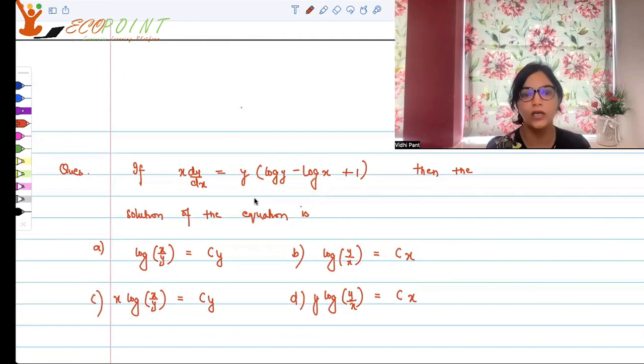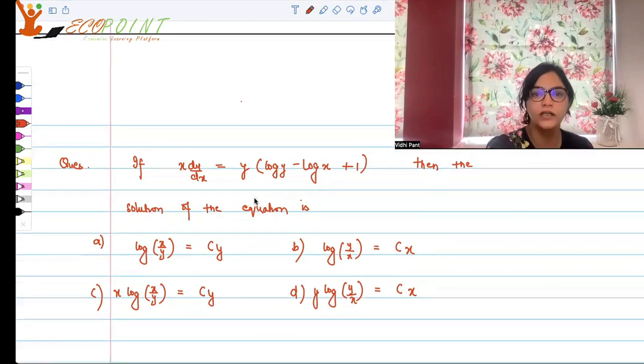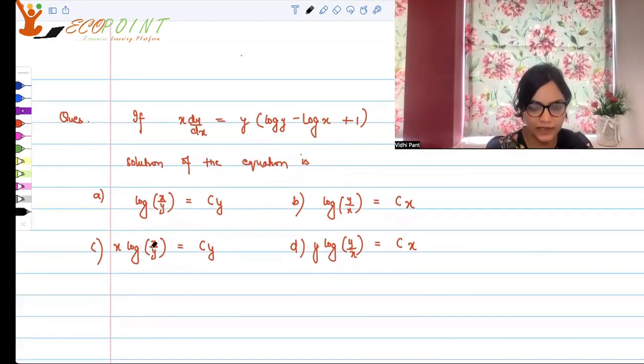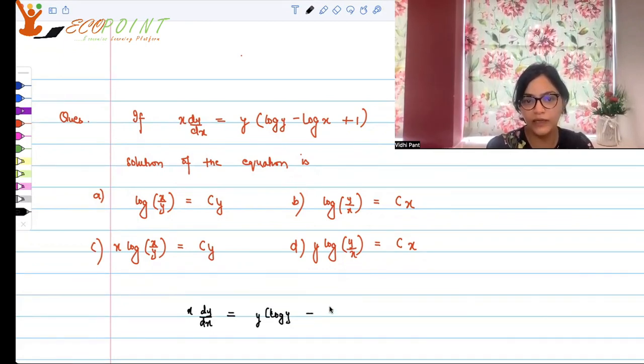These are your options. So we need to find out the solution of this equation and then we need to figure out which option is correct. So let's start it. What is given to us is that x dy by dx is equal to y log y minus log x plus 1.